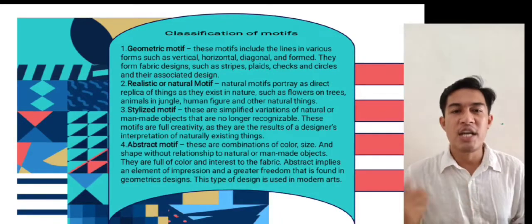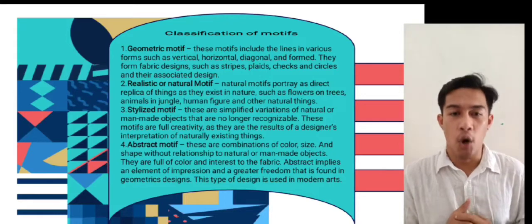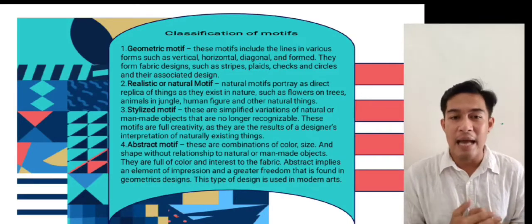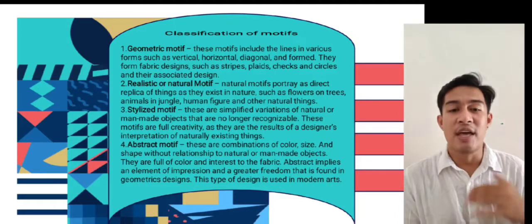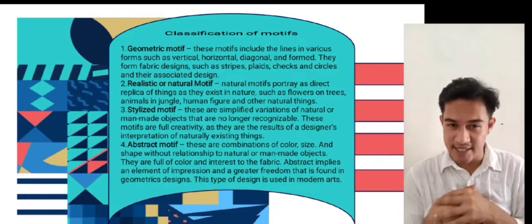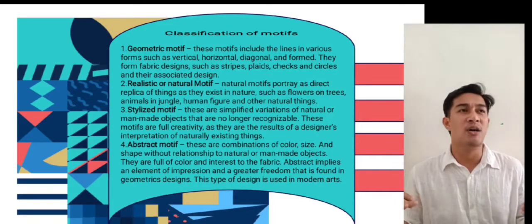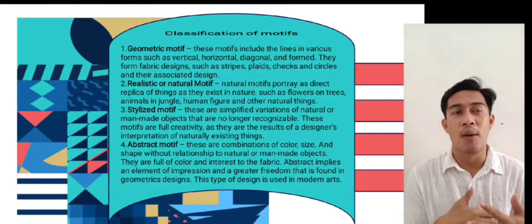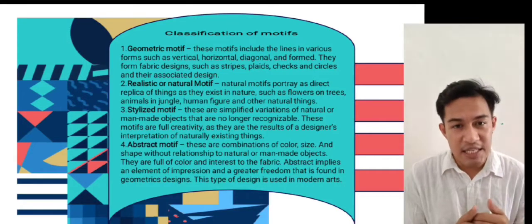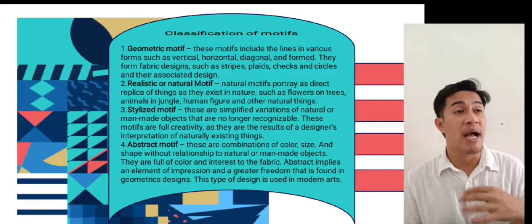Fourth, abstract motif. These are combinations of color, size, and shape without relationship to natural or man-made objects. They are full of color and interest. Abstract implies an element of impression and greater freedom than is found in geometric designs, and this type of design is used in modern art. An example today is the boho style of theme, which represents different colors and shapes with the ideas and styles of the designers, and is a modern style in events today.